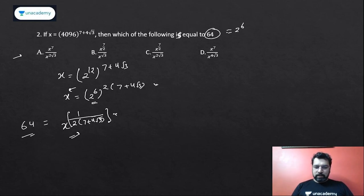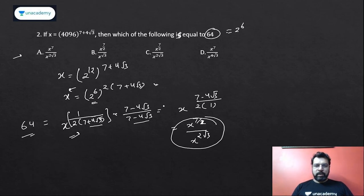So 64 I already have. I just need to use this in any of these forms. Obviously I need to rationalize because the options have 7 in the numerator power. So if I rationalize it, it will be 7 minus 4 root 3 upon 7 minus 4 root 3. So it would be x raised to the power 7 minus 4 root 3 divided by 2. When you do this into this, it's a squared minus b squared, that is 49 minus 48, that is 1 only. So you can simply see, this is x to the power 7 by 2, so x raised to power 7 by 2 minus 2 root 3 is simply x raised to power 2 root 3 in the denominator.